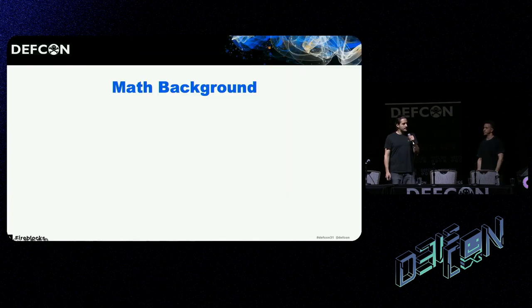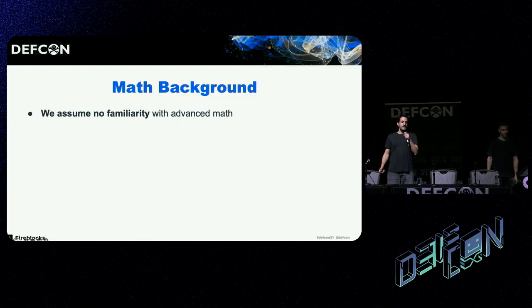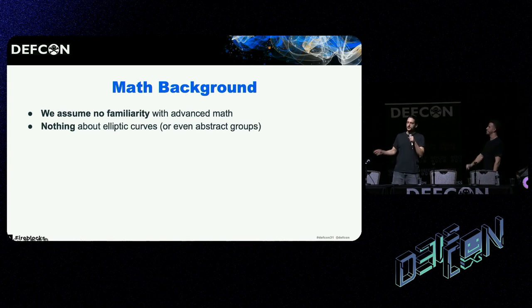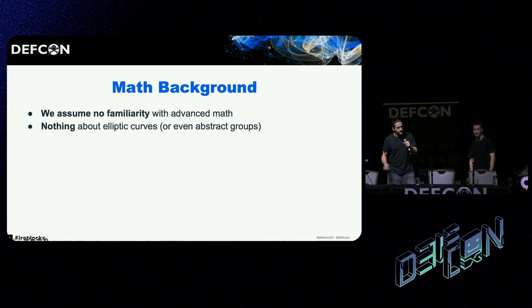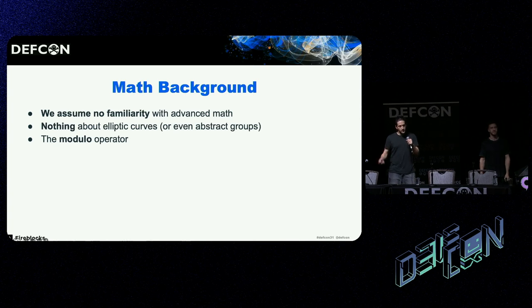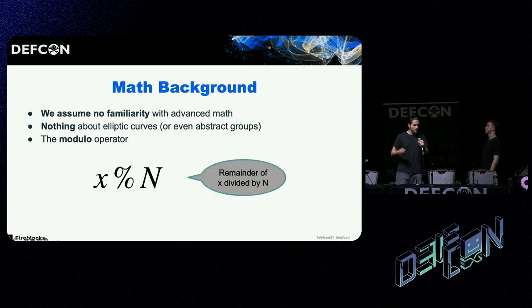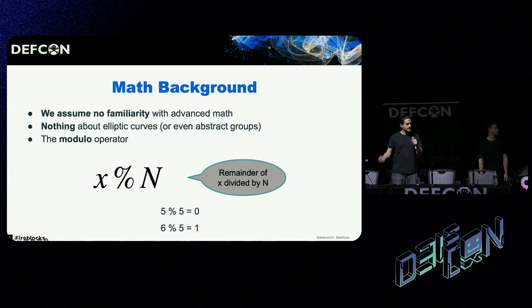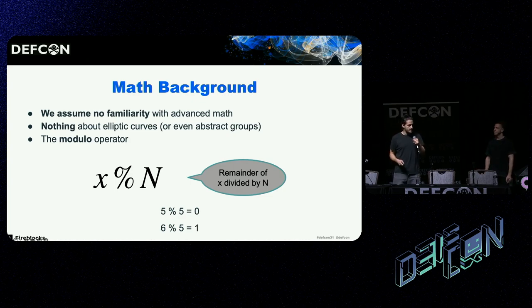Before we look at the exploits, we need a few items of background material. The first is the math — thankfully, no advanced math. The only thing you need to know for today is the modulo operator. X modulo N is the remainder of X divided by N. For example, 5 modulo 5 is 0 because 5 is divisible by itself, and 6 modulo 5 is 1 because 6 is greater than 5 and there's overflow.